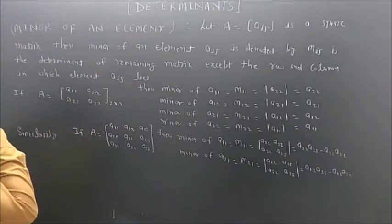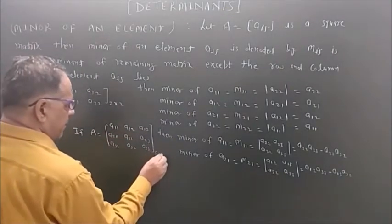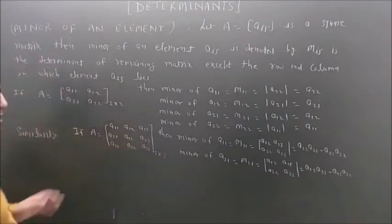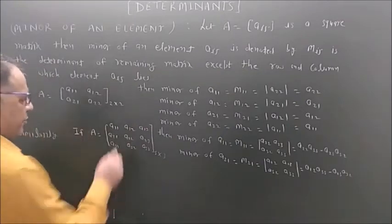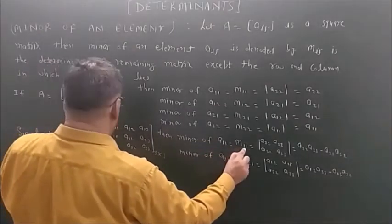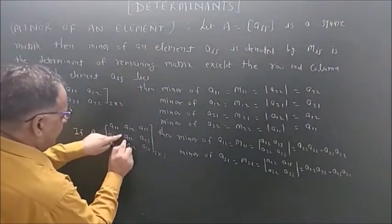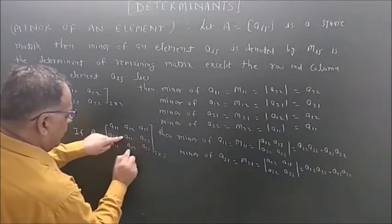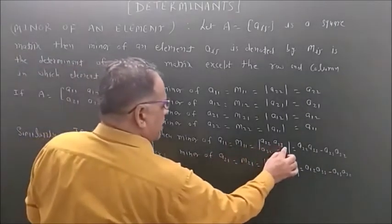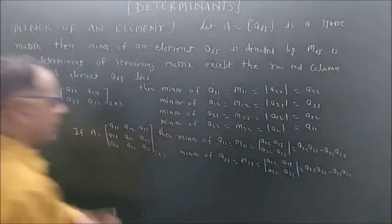If the matrix is 3x3 with elements a11 through a33, to find minor of a11, denoted m11, we leave the first row and first column. The remaining matrix is [a22, a23; a32, a33], and the determinant of this matrix gives the value of m11. For minor of a21, we leave the second row and first column, leaving [a12, a13; a32, a33], and the determinant of this matrix gives the value of m21. Since there are 9 elements, we can find 9 minors.